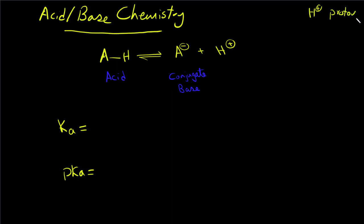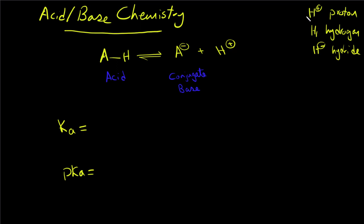There is a difference between a proton — which is a hydrogen with no electrons — the normal hydrogen from the periodic table, and the hydride, which is a hydrogen with an extra electron. When the acid dissociates it becomes a conjugate base and releases a proton.